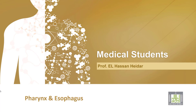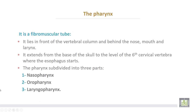Pharynx is a fibromuscular tube that lies in front of the vertebral column and behind the nose, mouth, and the larynx. It extends from the base of the skull to the level of the sixth cervical vertebra, where the esophagus starts.